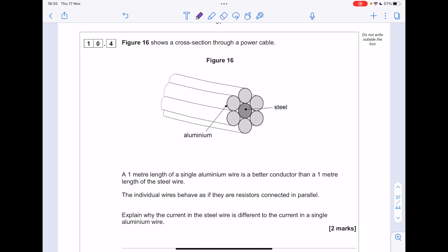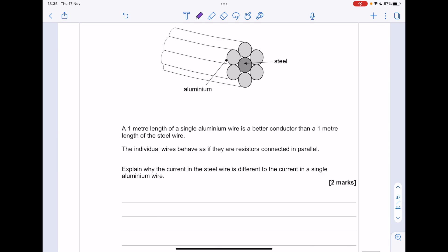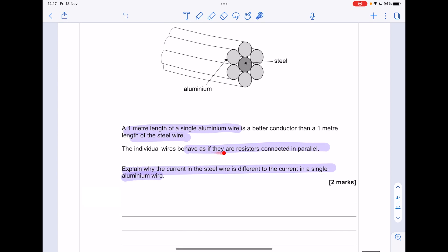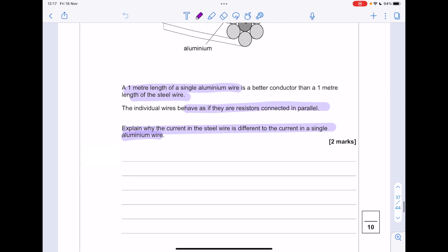Figure 16 shows a cross section through a power cable, a one meter length of a single aluminum wire. The key thing here is the statement that the individual wires behave as if they're resistors connected in parallel. What does that mean? It means that the potential difference is the same in these wires. But according to this formula triangle, for the potential difference to be the same and the current to be different, it means that the resistance must also be different between the steel and the aluminum, and in fact it's higher in the steel.